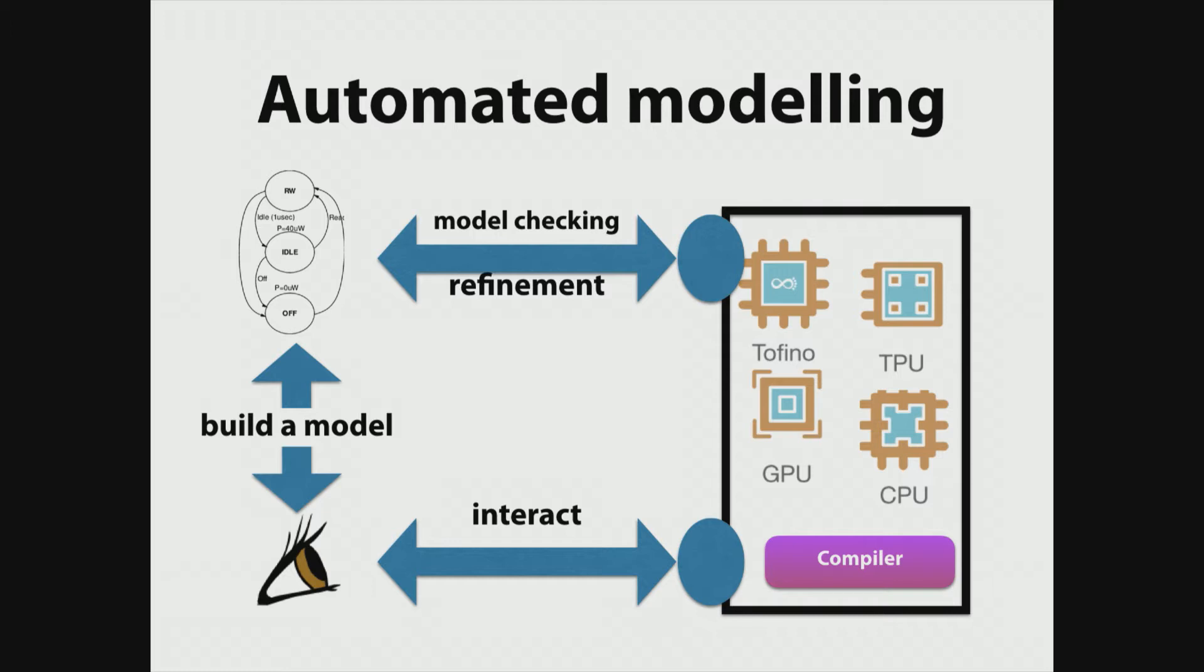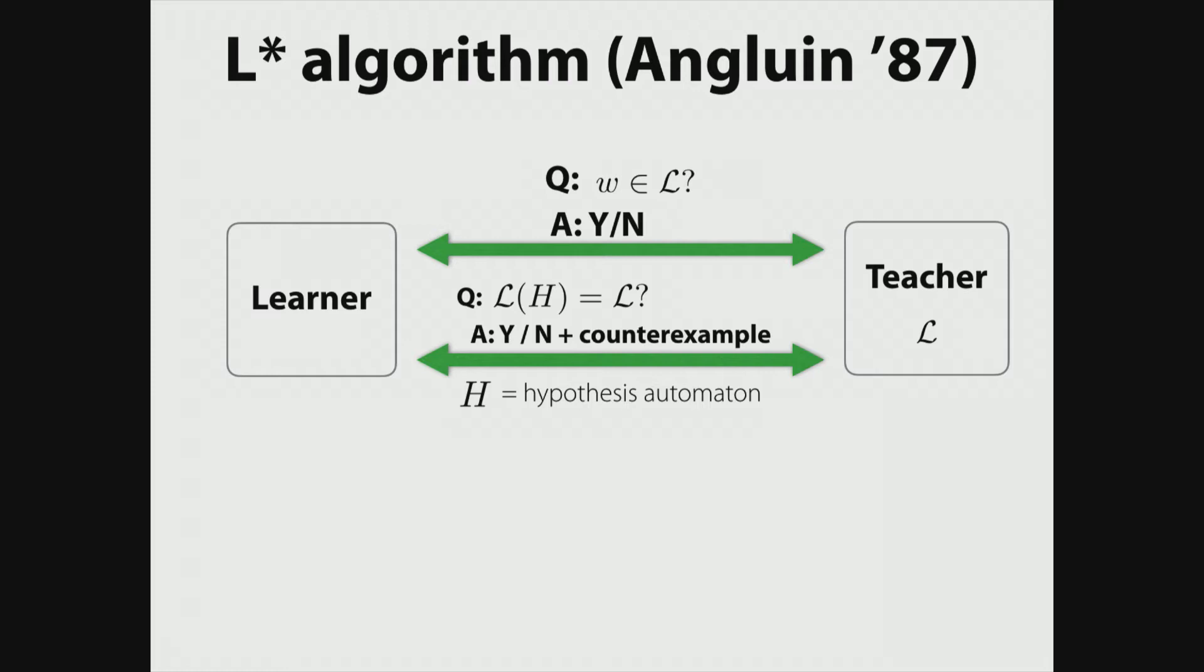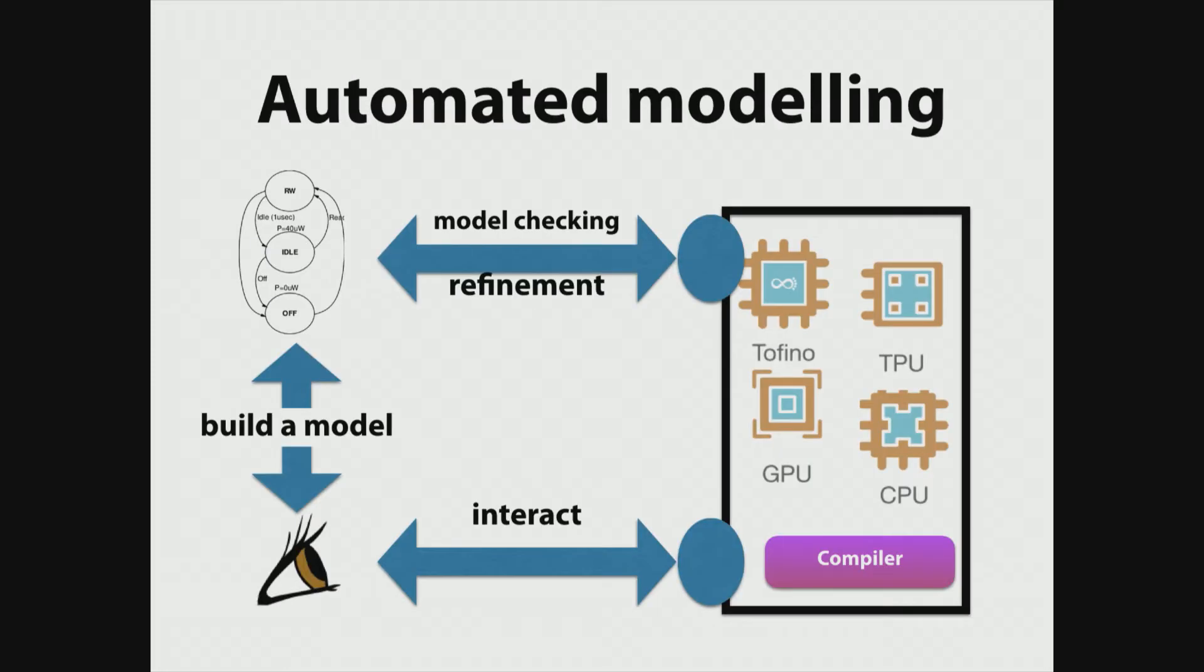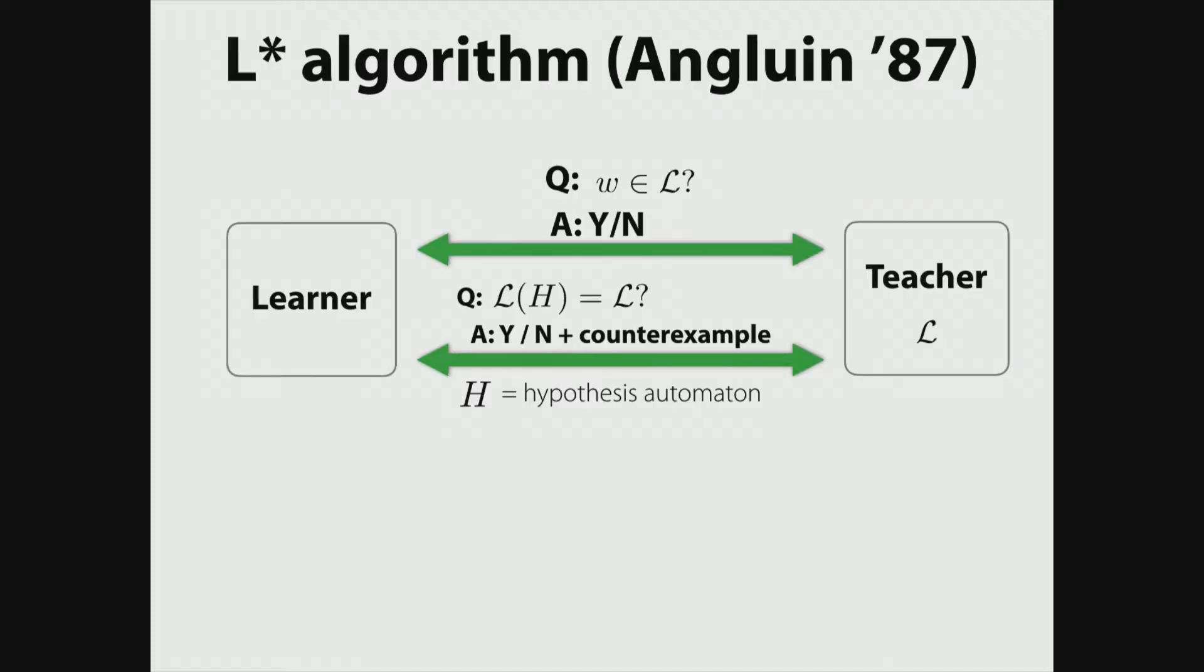So we're going to interact with them. And by interacting with them, we're going to observe traces of what these things can produce. And based on those traces, we're going to build a model that's going to look like an automaton that will capture part of the behavior that we have observed. Now, based on this model, we're then going to try to show that the model itself is correct. So we're going to run this model as a monitor and we're going to check. We're going to model check. And based on potential bugs we find while we're doing this model checking, we're going to refine our model. And this whole process can mostly be done in an automatic way.